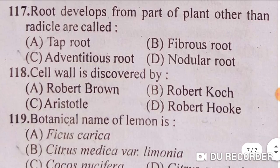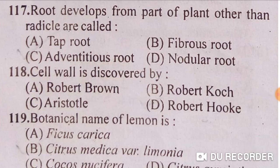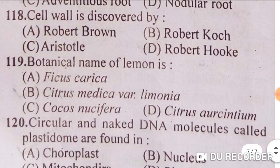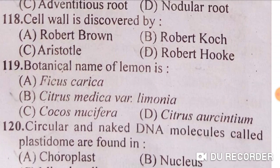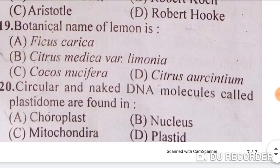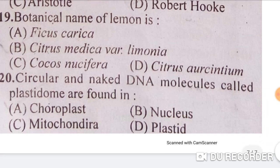Roots that develop from parts of a plant other than the radicle are called adventitious roots — option C is correct. Cell wall was discovered by Robert Hooke — option D is correct. The botanical name of lemon is Citrus medica var. limonia — option B is correct. Circular and naked DNA molecules called plastidome are found in chloroplasts — option A is correct.